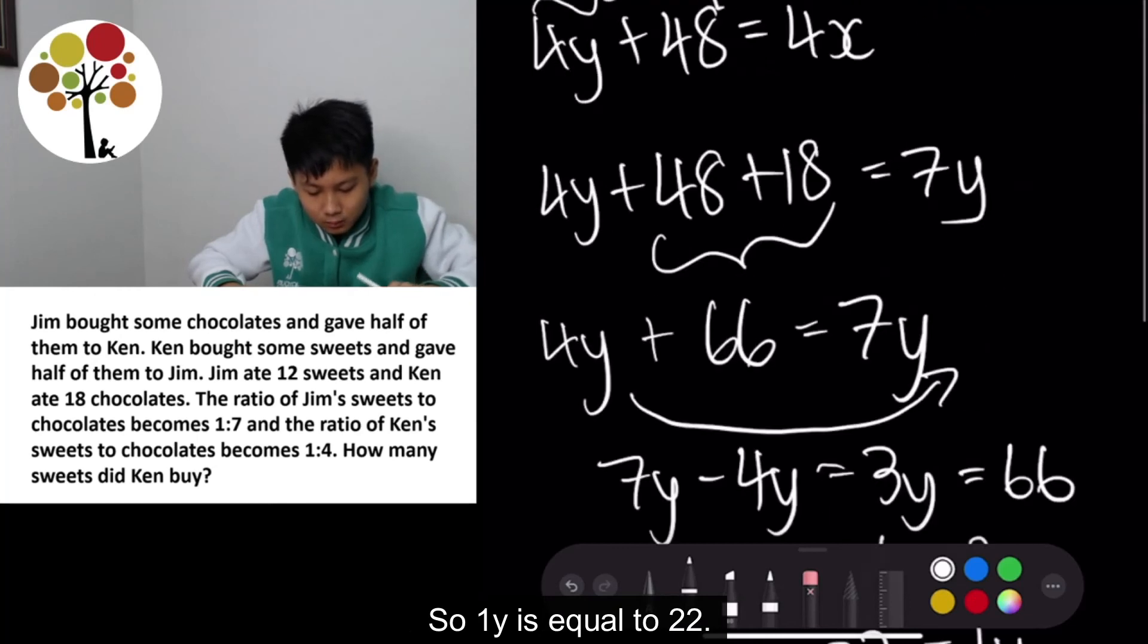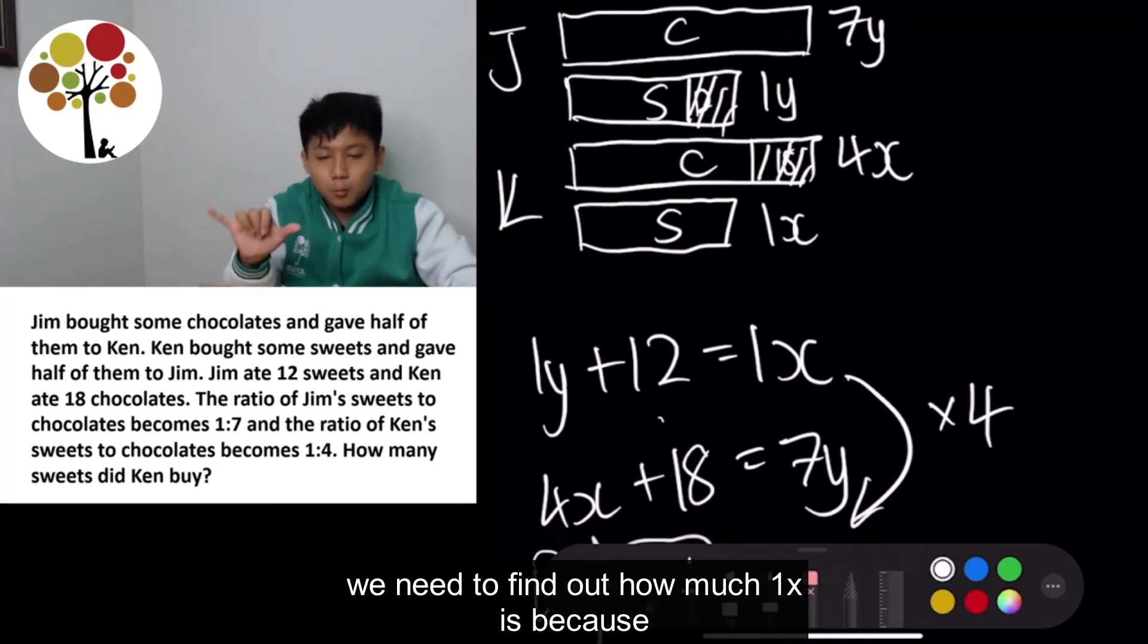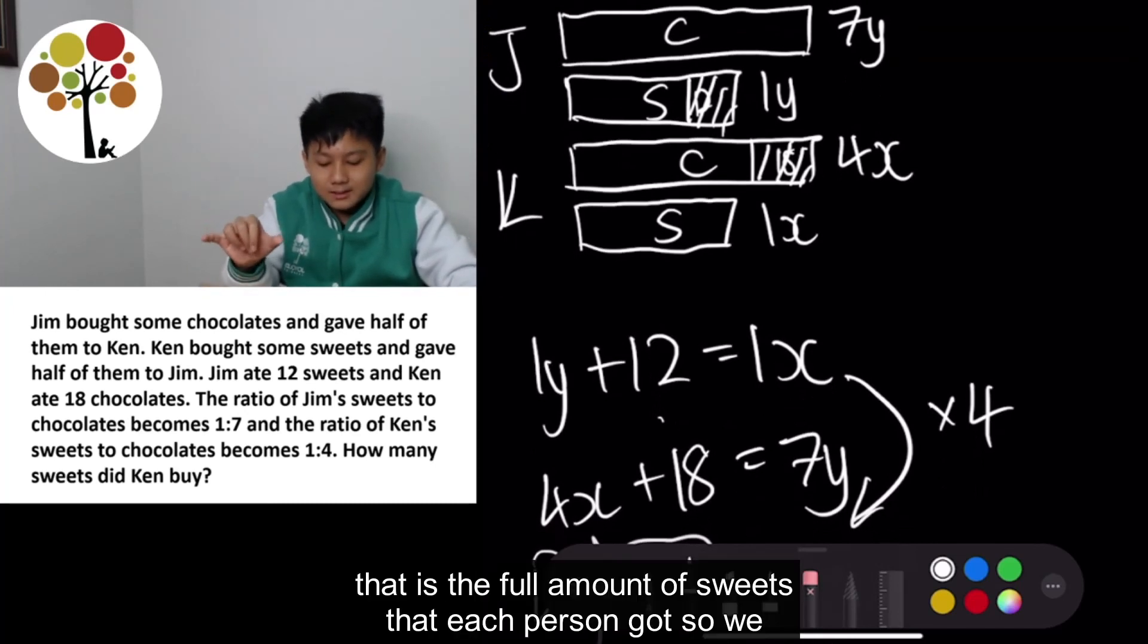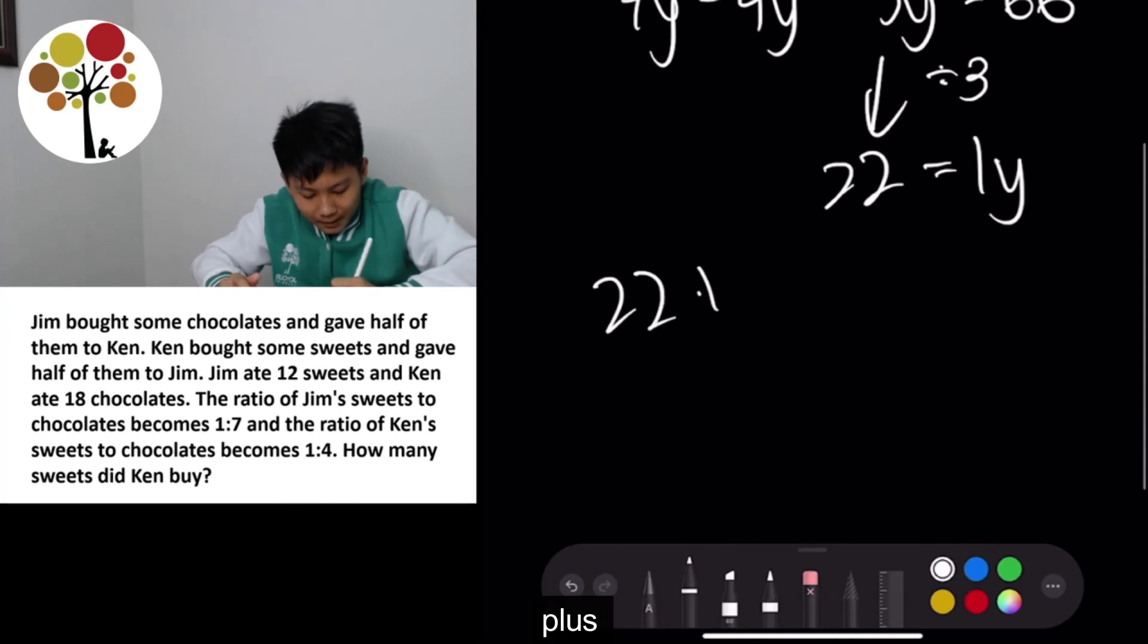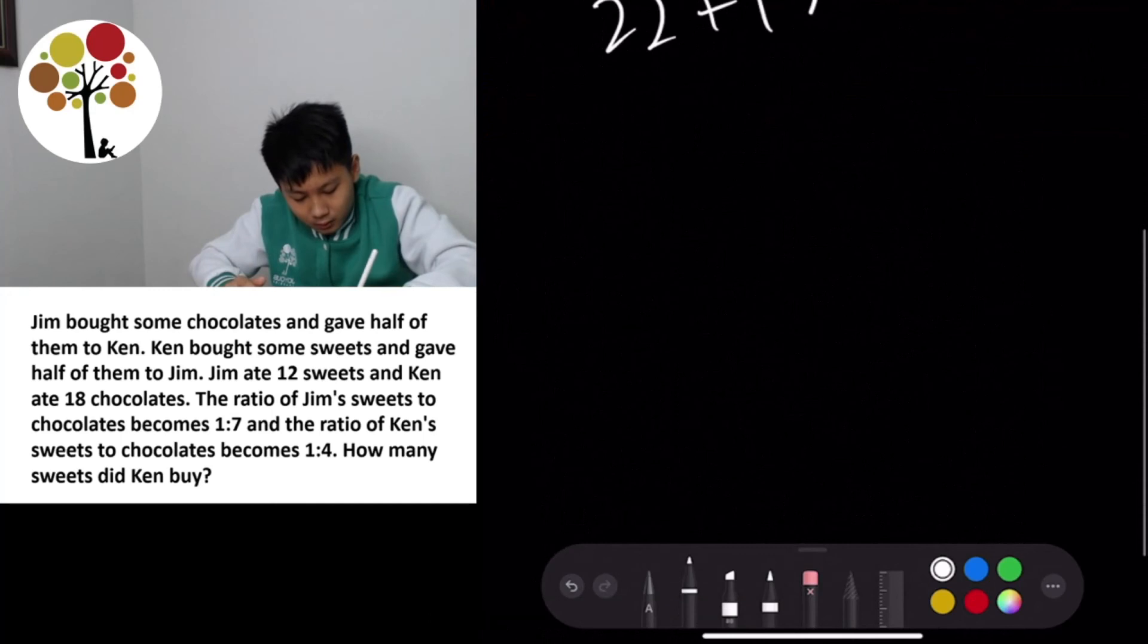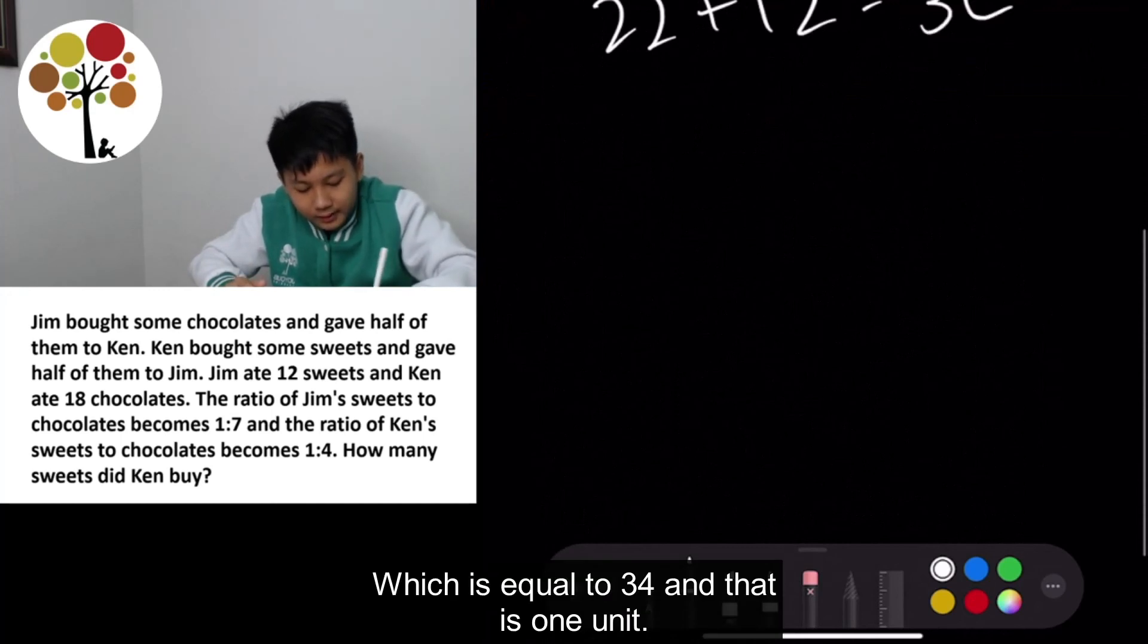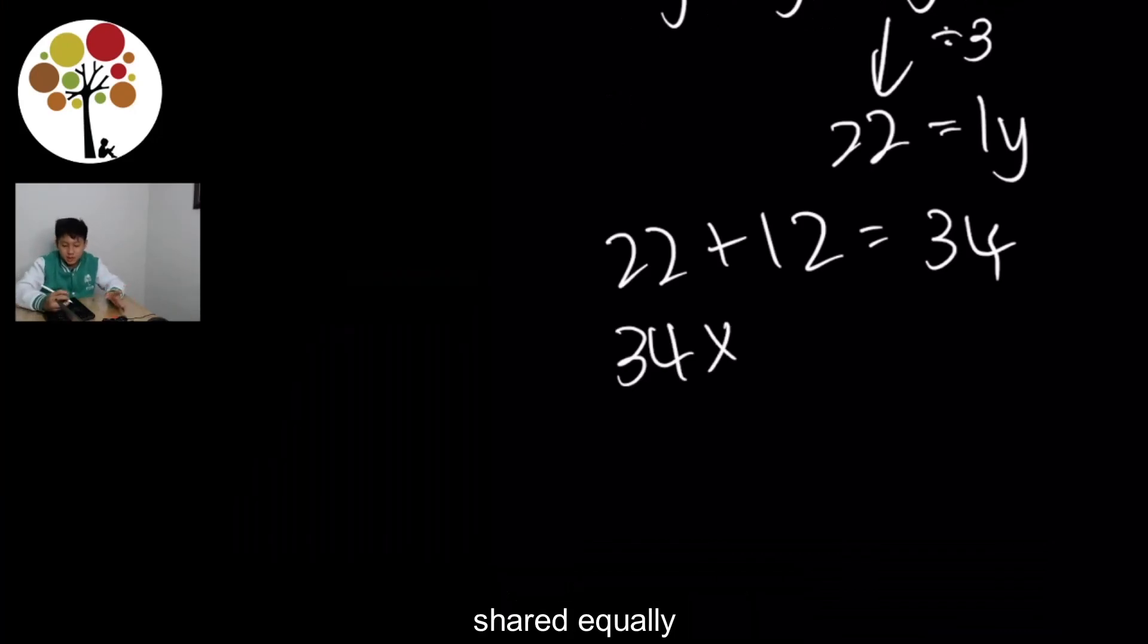So 1Y is equal to 22. So the question is, how many sweets did Ken buy? So first we need to find out how much 1X is because that is the full amount of sweets that each person got. So we have to take 22 plus 12 which was eaten by Jim which is equal to 34. And that is 1 unit. So now we just have to take 34 times 2 because it was shared equally. And we get 68. And that's your final answer.